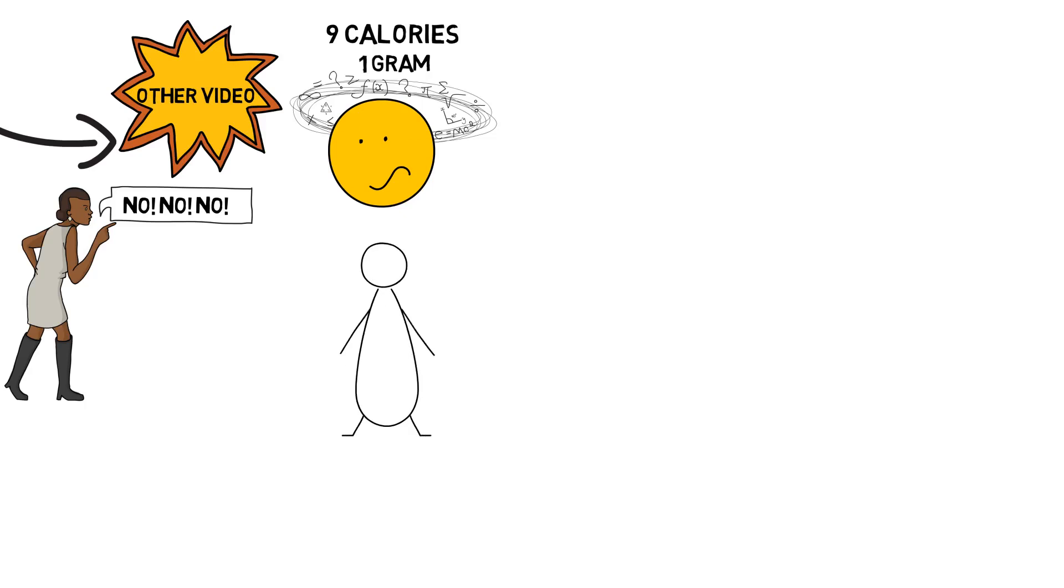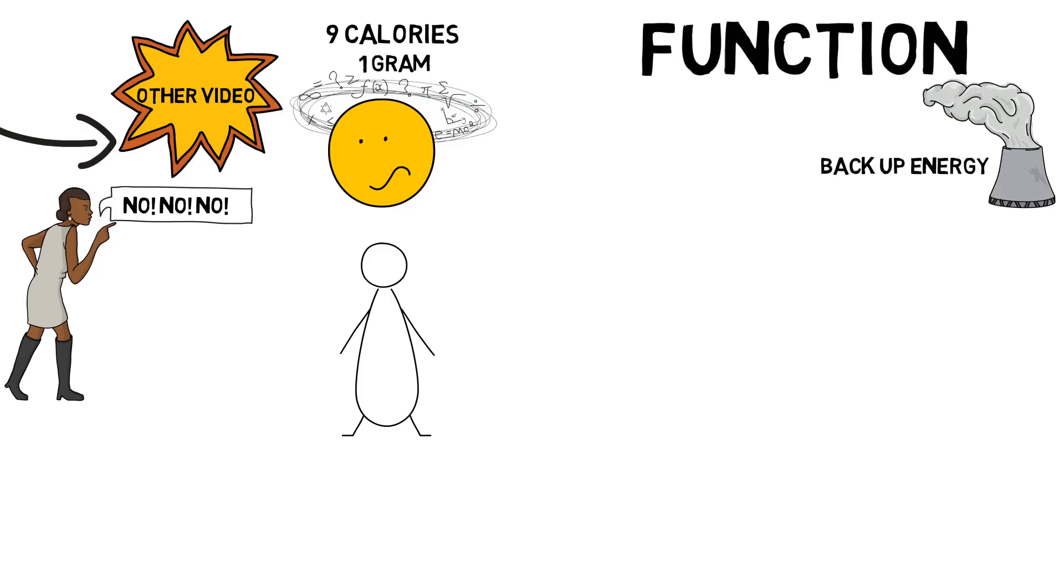Now there are four types of fat, but today we aren't going to dive that deep into it. All we need to know in the basics is that its main functions are for being a backup energy source from when you're out of carbohydrates. It also helps with things like hair, skin and nail production, as well as hormone control.